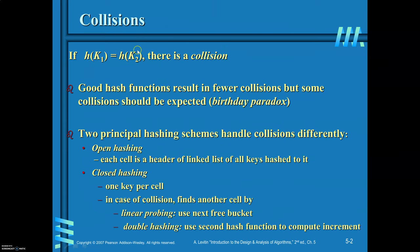When you find the hash key value for k1 and k2, if both have the same key values, then a collision occurs. In order to avoid this, you can have two ways of organizing the keys: one is open hashing, the other is closed hashing. These are used to avoid the collision of hash keys.